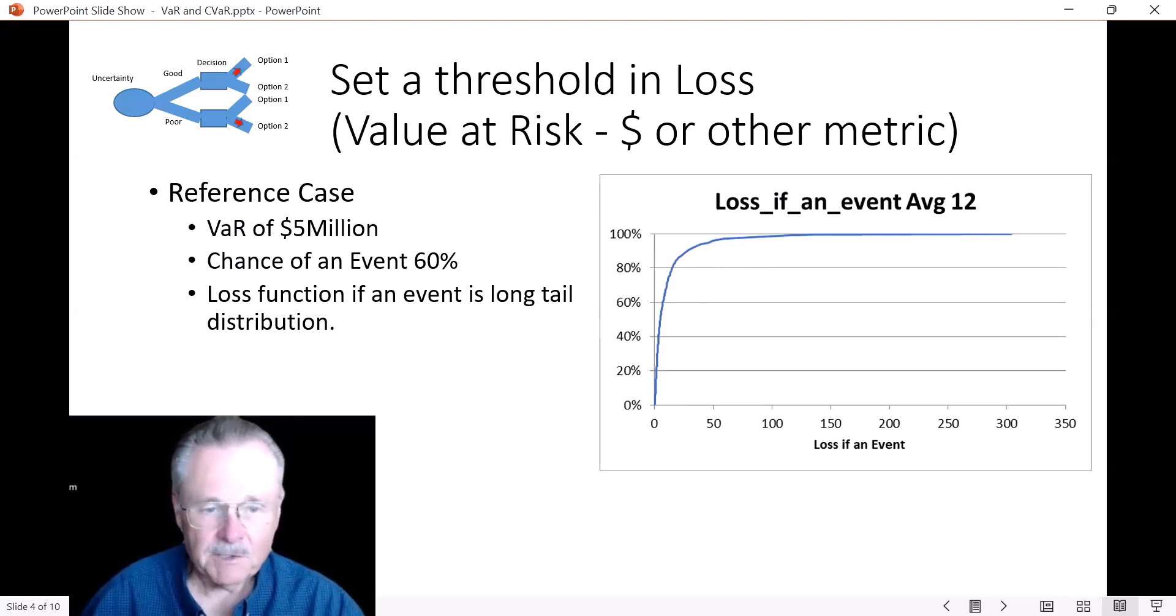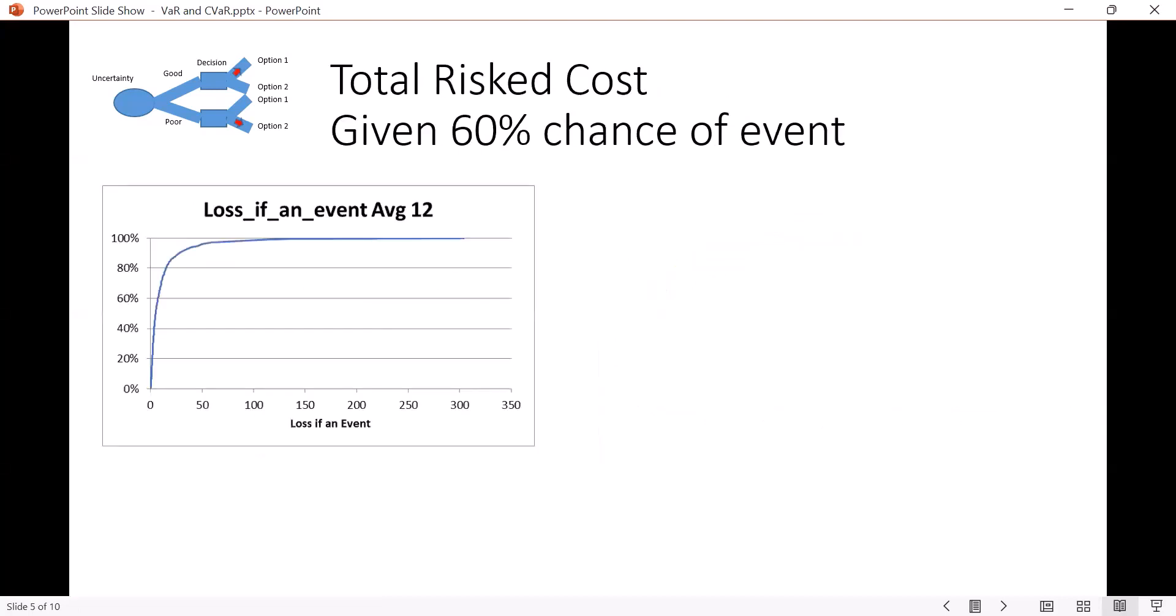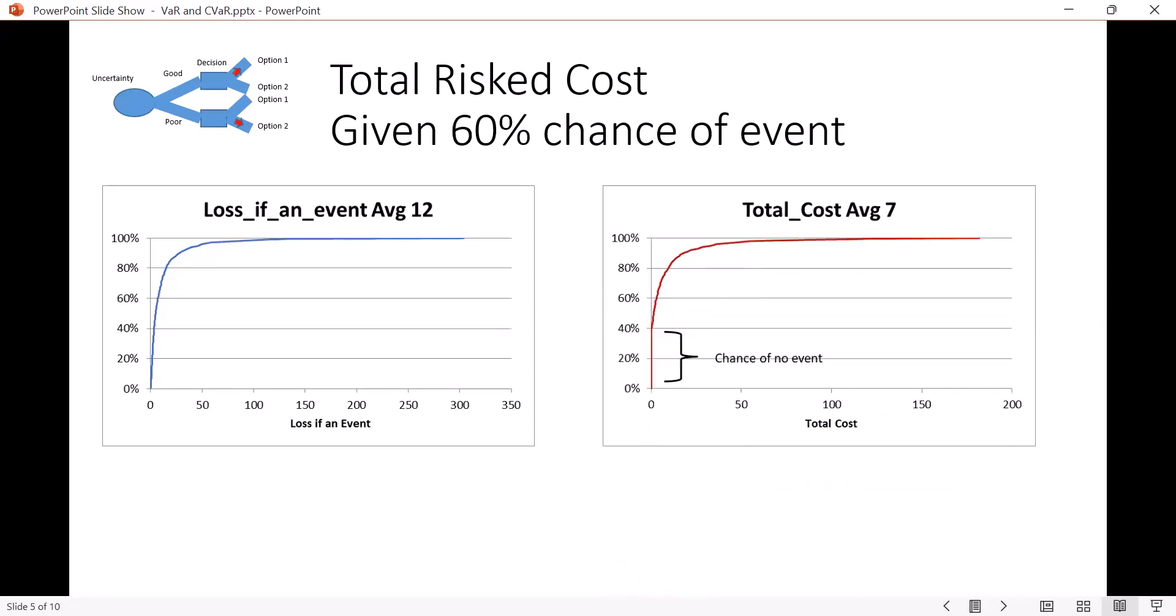And then we have the chance of an event. So here's that same curve I showed you. But when you include the 60% chance of the event, there's a 40% chance that it doesn't happen. So there's no loss. So here's the 40% that there's no loss, and here's the 60% that there is a loss. So the shape of this curve matches this, but it's been scaled down to 60%.